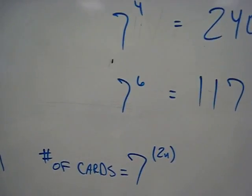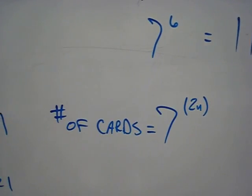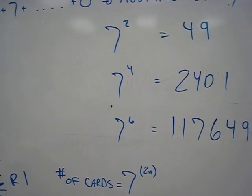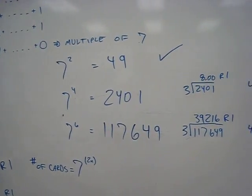So our general solution is seven to the two n power, where n is any number from one to infinity.